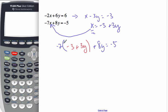So now we've got an equation of just one variable. And that can be solved. So expand the brackets. Negative 7 times negative 3 is 21. And then this is negative 21y.